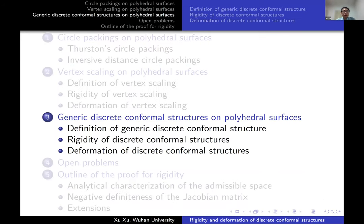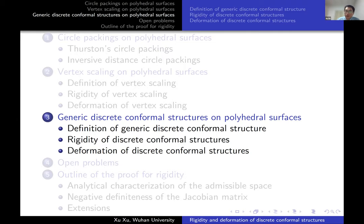We have different types of discrete conformal structures on surfaces, including the tangential circle packing, Thurston circle packing, inversive distance circle packing, and vertex scaling. A natural question is whether these different types can be unified in a single framework. The answer is yes.